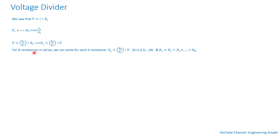For n resistances in series, we can write for each resistance K: VK — the voltage across a particular resistance in series — equals the resistance of that component divided by the equivalent series resistance times the source voltage. K can be 1, 2, 3, and so on. This is called the voltage divider, and it works for resistances in series.